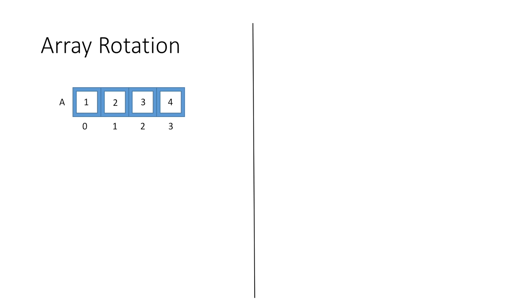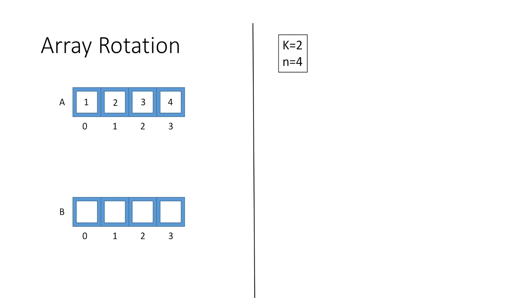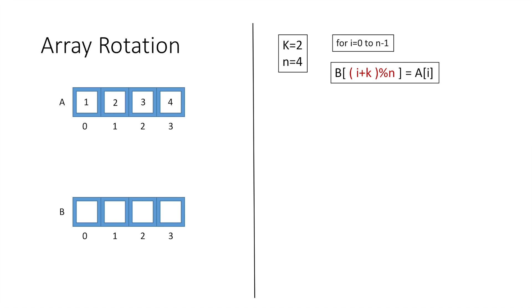Now let's see how we will actually do it. Suppose array a has 4 elements: 1, 2, 3, and 4, and we have to rotate it by 2 positions, so k is 2 and n is 4. We will create another array b to hold the rotated elements, traversing array a from index 0 to n-1, and for every element we apply the formula: b[(i + k) % n] = a[i]. This copies the rotated elements into array b.